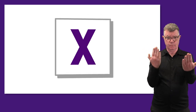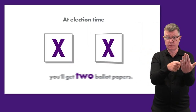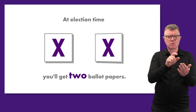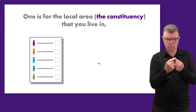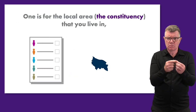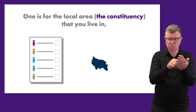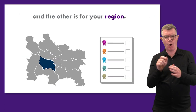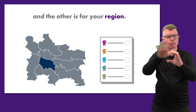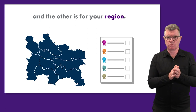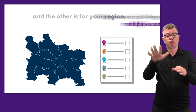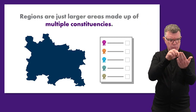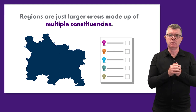At election time, you'll get two ballot papers. One is for the local area, the constituency, that you live in, and the other is for your region. Regions are just larger areas made up of multiple constituencies.